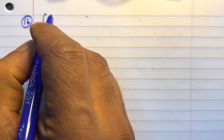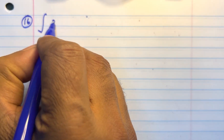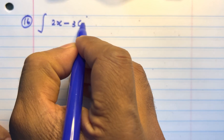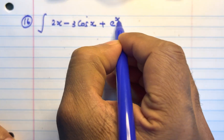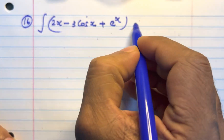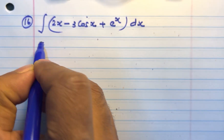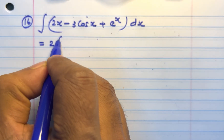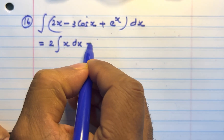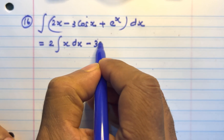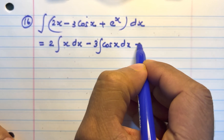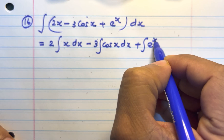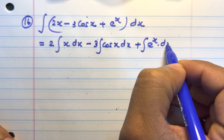Question number 16. Integral of (2x minus 3cosx plus e raised to x) into dx. That is equal to 2 integral x dx minus 3 integral cosx dx plus integral e raised to x into dx.